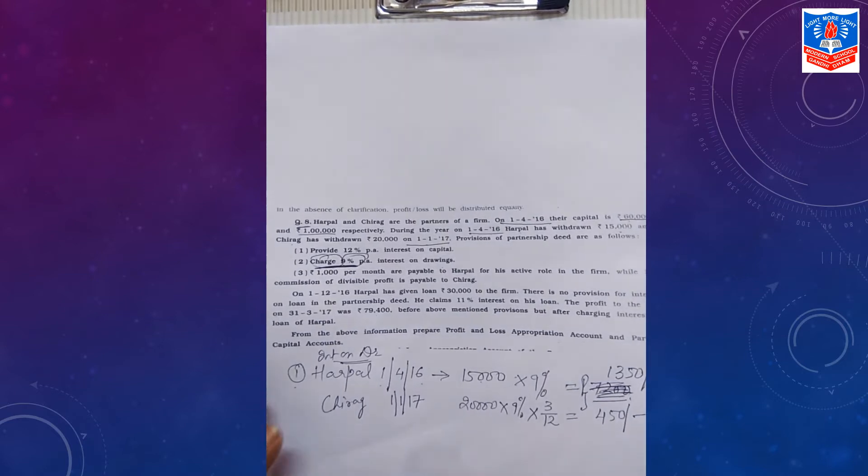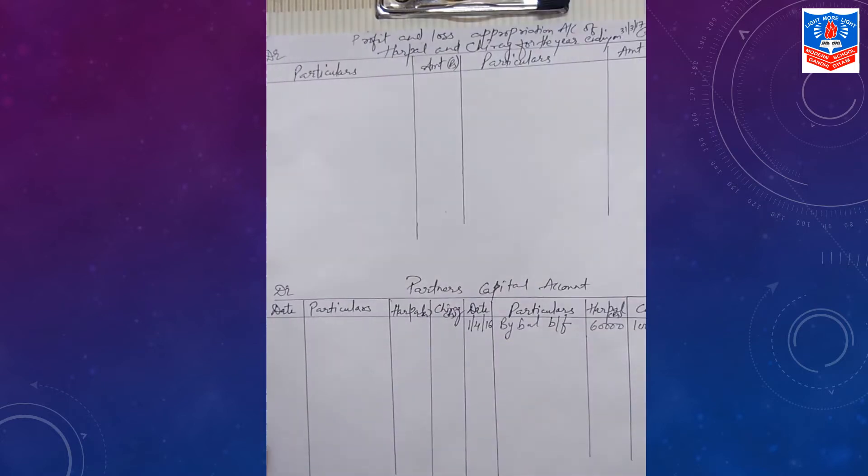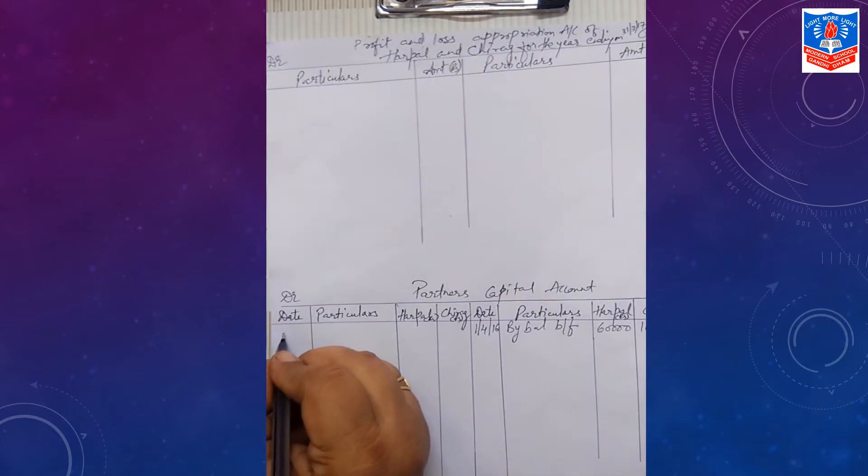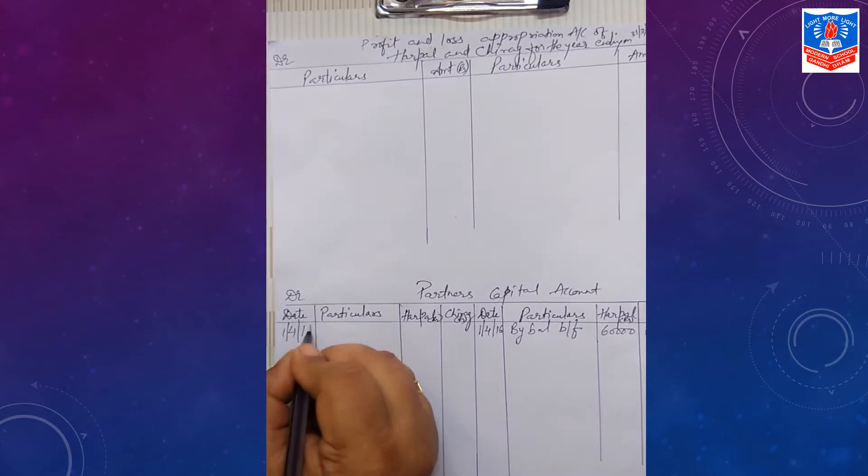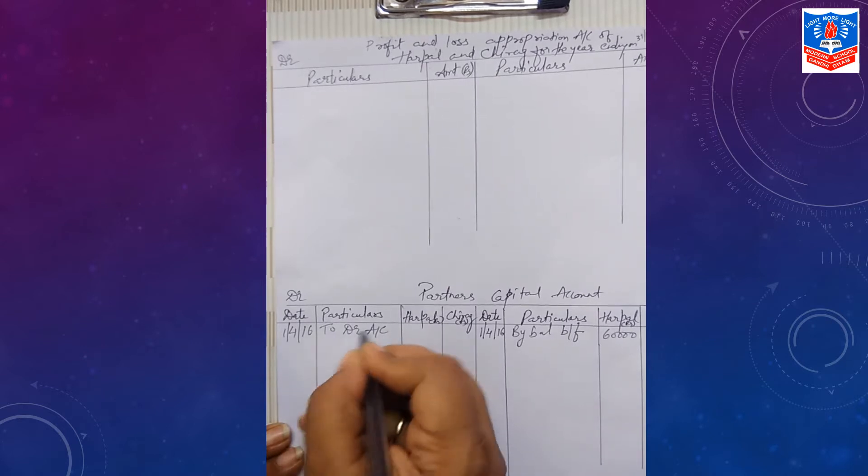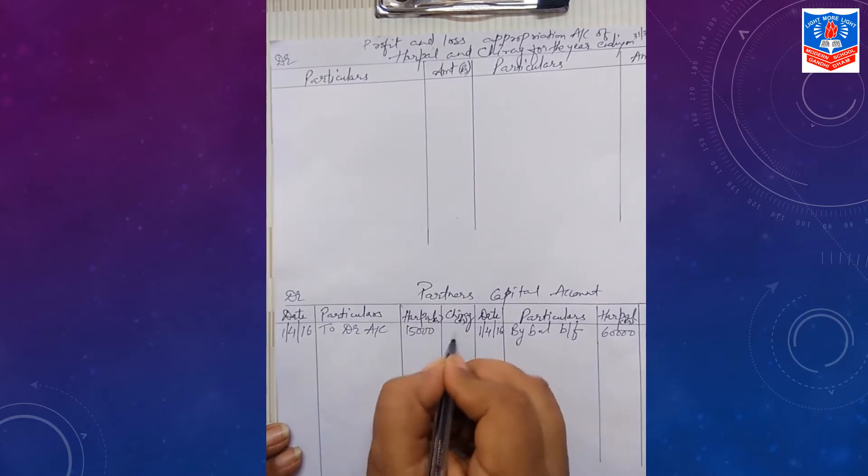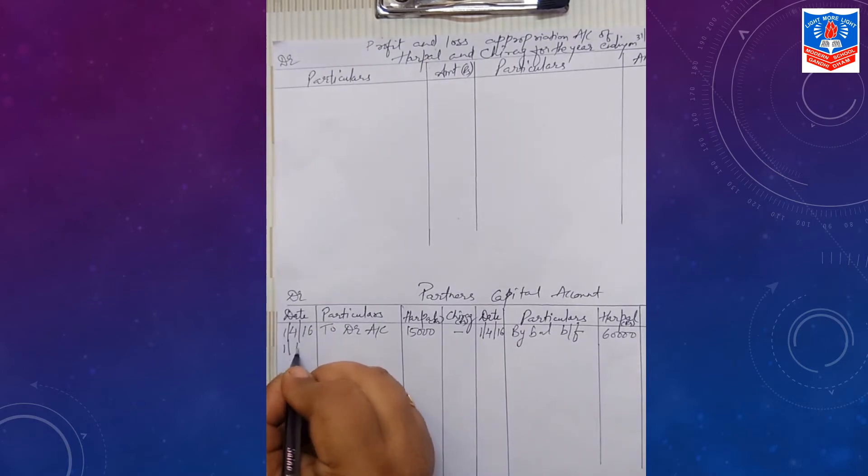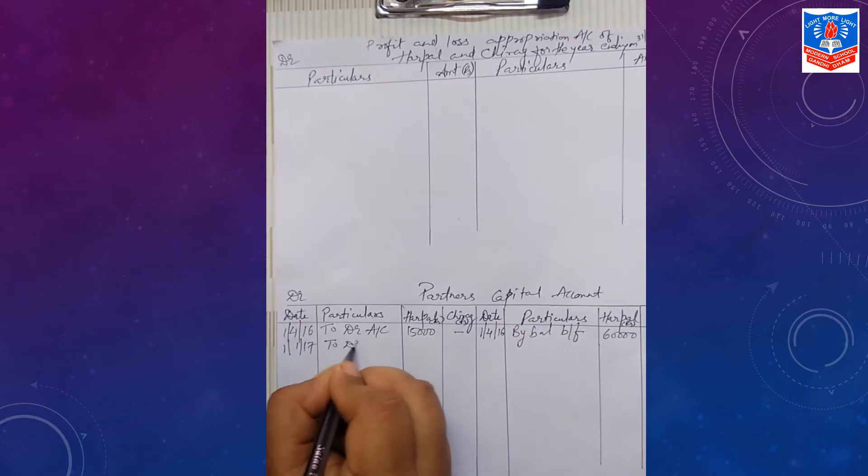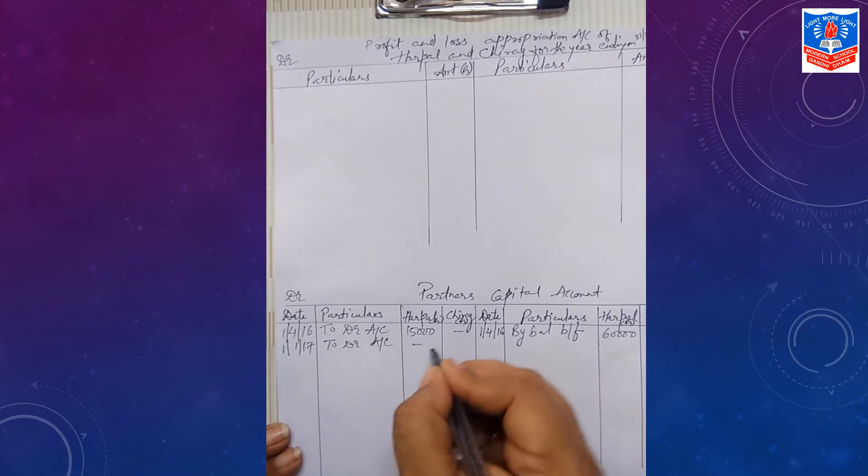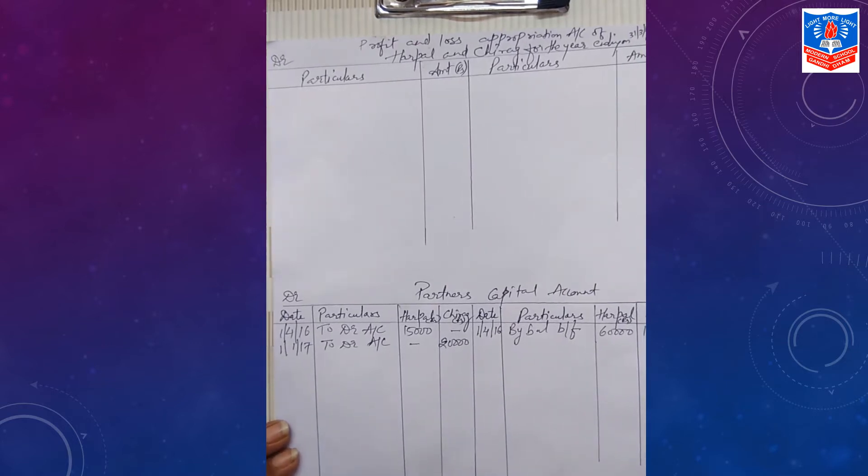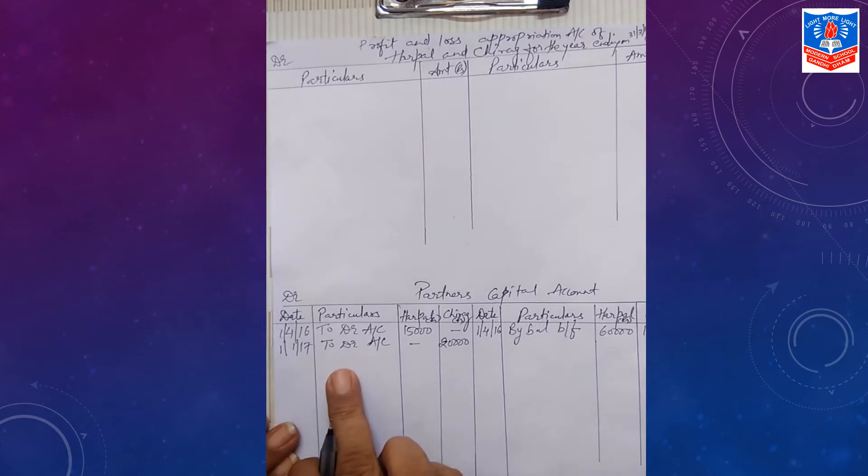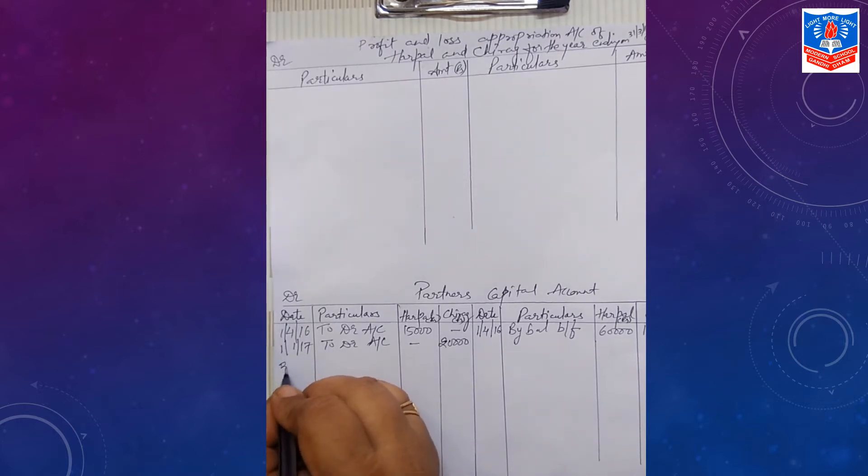Let us adjust this to partner's capital account. First show drawings. We have to show with the date. 1st April 2016, to drawings account, for Harpal you can mention Rs. 15,000. But then on 1st January 2017, again to drawings account for Chirag, amount of drawings is given to you Rs. 20,000. Be very careful. Drawings is debited to partner's capital account.